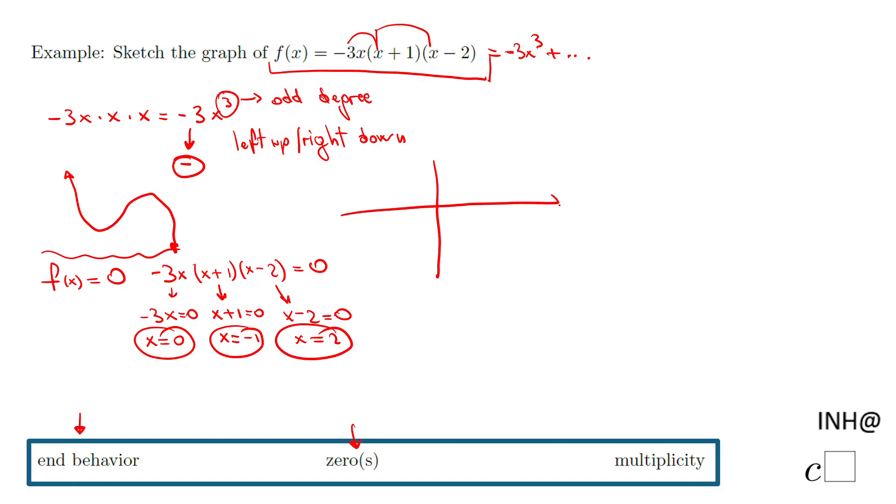So if you ask me now, probably what I will do, I will sketch an x and y axis. Okay, and I will plot these zeros. So we have zero, x equals zero, which means the origin. X equals negative 1, which is this guy, negative 1 and 0. And x equals 2, which is this 2 and 0.